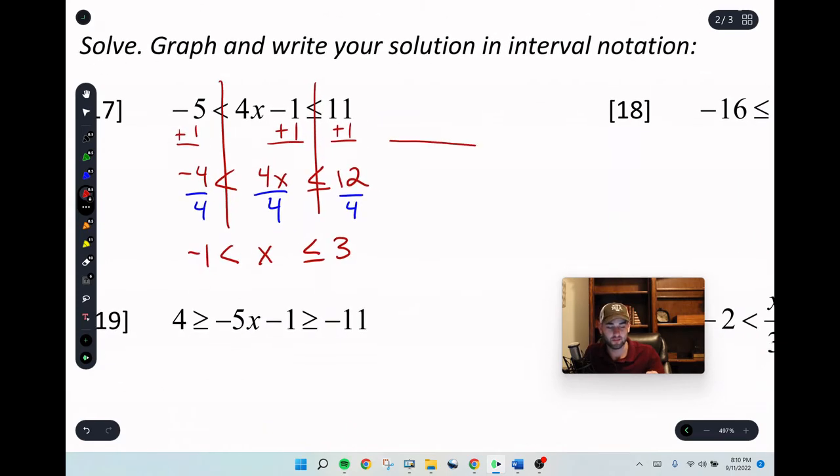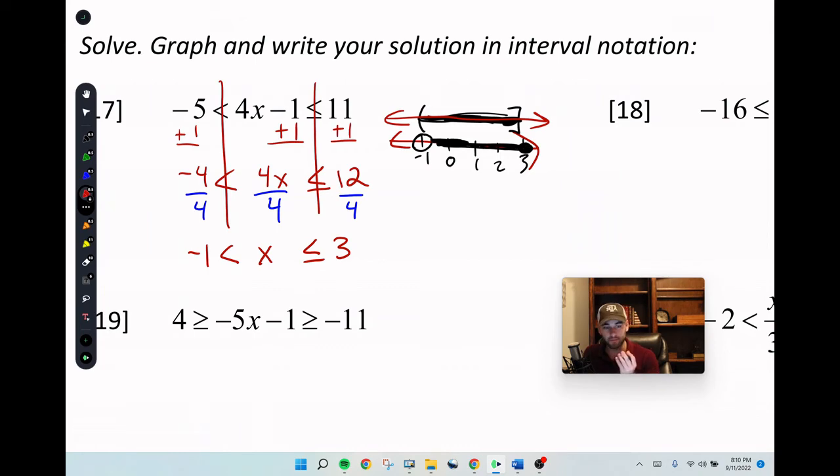And then we'll graph this just like before. Draw our number lines. I'm going to go negative 1, 0, 1, 2, 3. Perfect. So now we're looking at that number line, and we're saying x is in between negative 1 with an open circle, and 3 with a closed circle, and then we just shade it in. With our bracket notation, it'd look like open bracket, shade it in, closed bracket. Same number line.